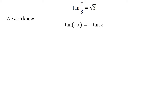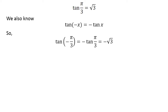The verification of this identity has been explained in the video appearing in the upper right corner, and the link is also mentioned in the description section. So, tangent of minus pi upon 3 is equal to minus square root of 3.